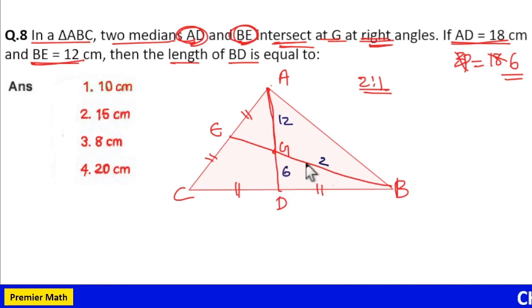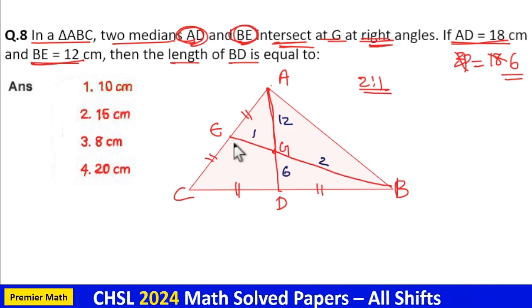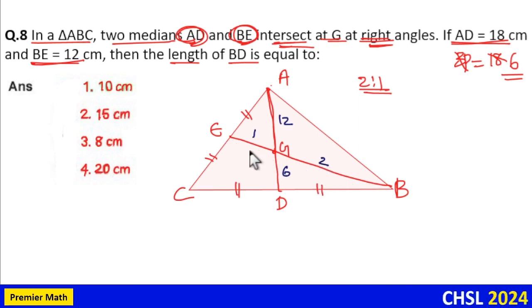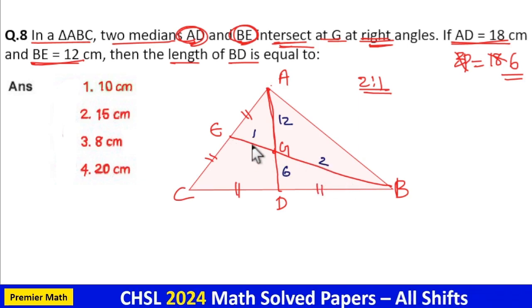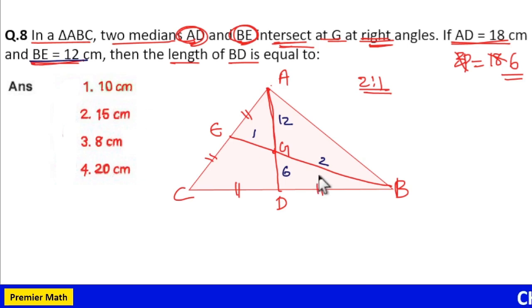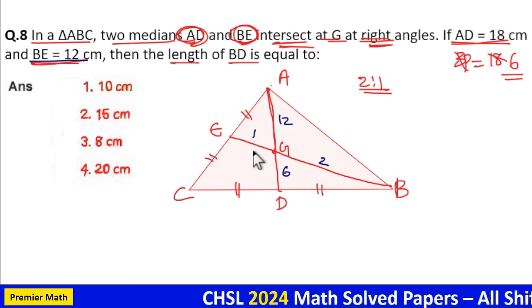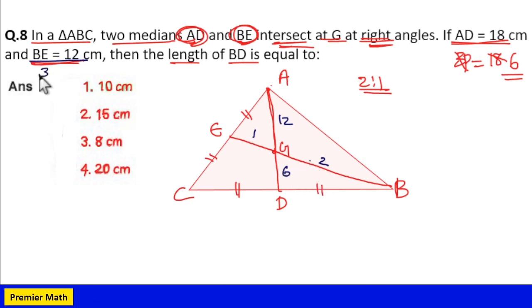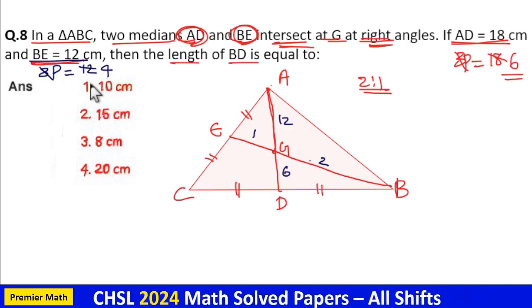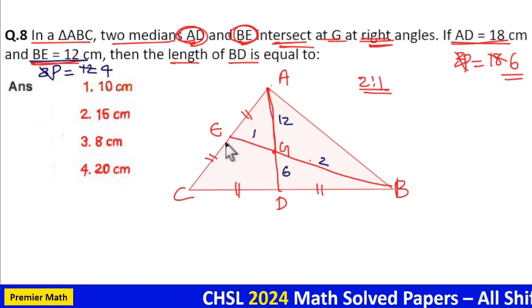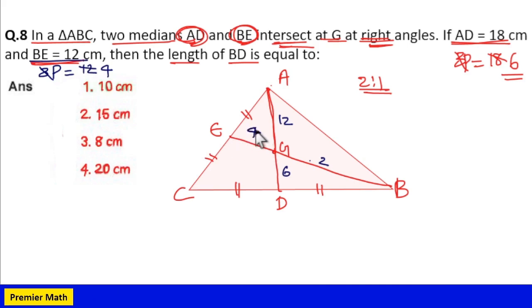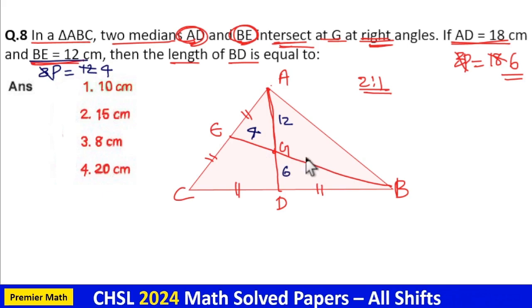Same way, this median also bisects at 2 is to 1 ratio. Here BE is 12 cm, which means 2 plus 1, 3 parts equals 12 cm. Then 1 part equals 4 cm. If 1 part is 4 cm, this length equals 4 cm and this length equals 2 into 4, which is 8 cm.